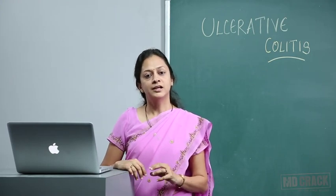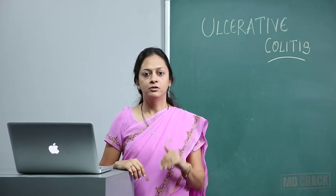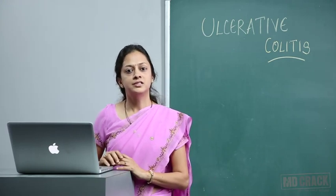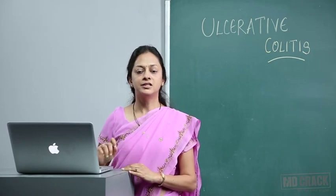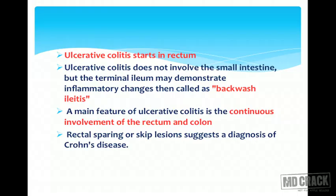In Crohn's, it can affect any organ from mouth to the anal canal, whereas in ulcerative colitis mainly the colon is involved and it starts in the rectum. Ulcerative colitis does not involve the small intestine, but the terminal ileum may demonstrate inflammatory changes, and then it is called backwash ileitis.